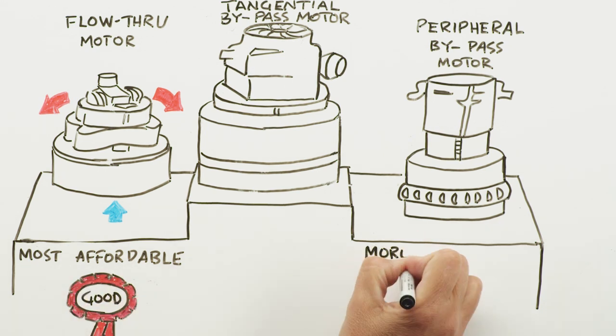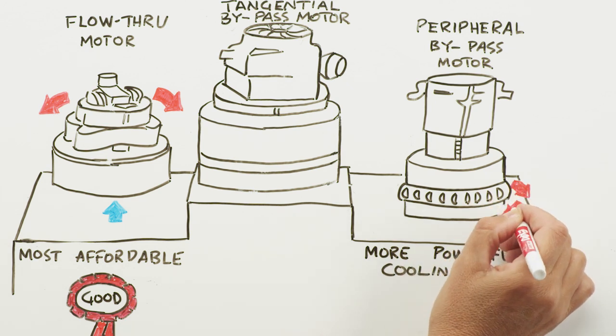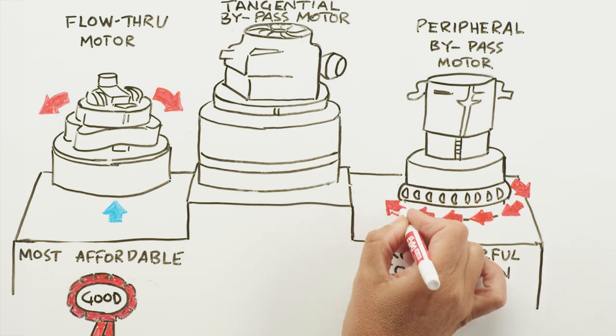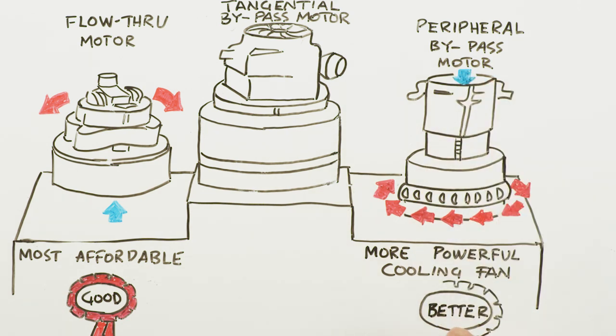A peripheral bypass motor is a motor with a dedicated cooling fan that blows fresh, clean air over the armature and exhausts it through small vents around the side of the motor. This motor is a better option, but it also exhausts heated air around the motor, which can affect motor life.